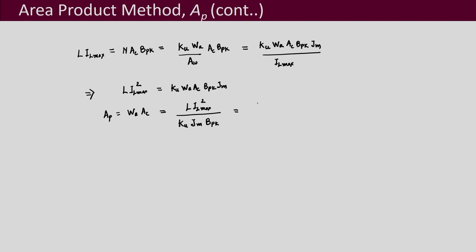From this, L × IL_max² equals Ku × WA × AC × B_pk × JM. Since area product AP = WA × AC, it follows that AP = L × IL_max² / (Ku × JM × B_pk), which equals 2Wm / (Ku × JM × B_pk).